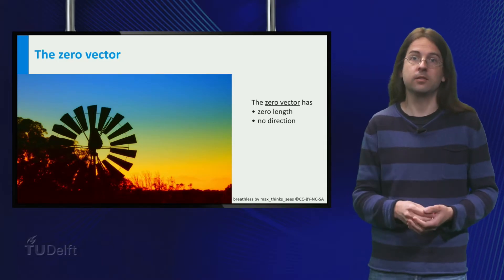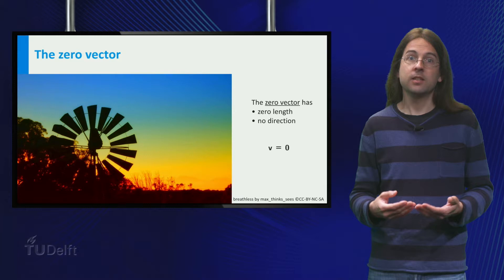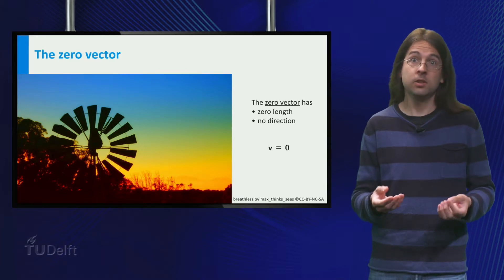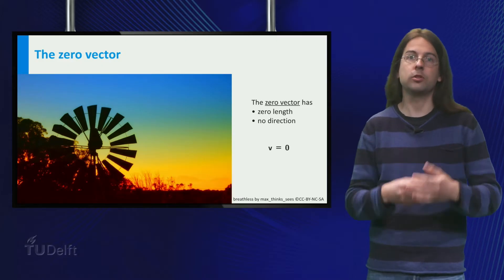This is called the zero vector, which is the unique vector which does not have a direction. This vector is written as just the number zero with the this-is-a-vector notation, in this case a bold zero.